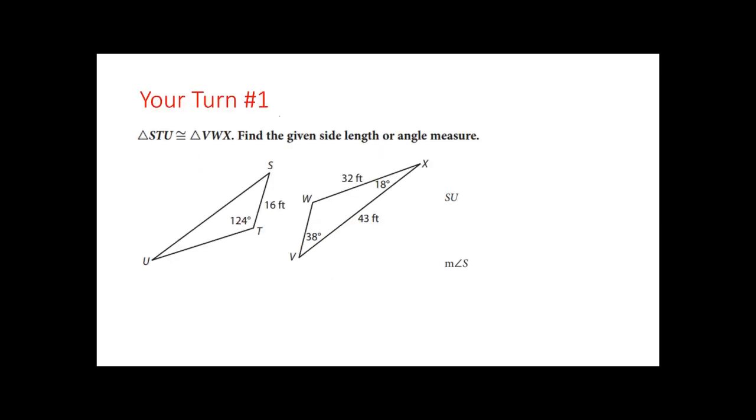Now, your turn number one. Find the given side length and angle measurement. So find SU, this guy right here. And what side does he correspond to? Compared to the other triangle, which is given to us as congruent. And then after that, find angle S and figure out who he is congruent or corresponding to.